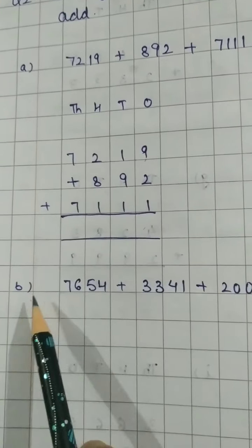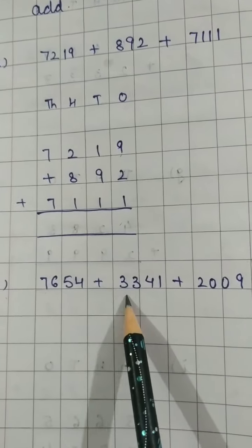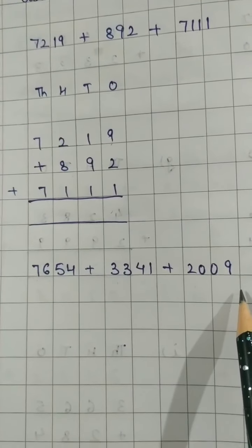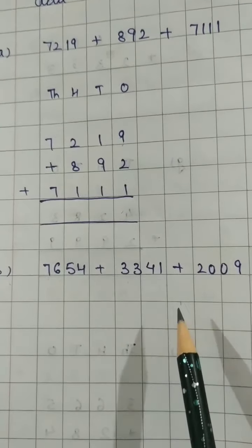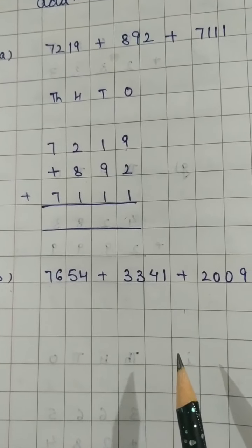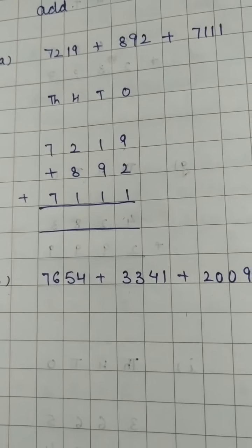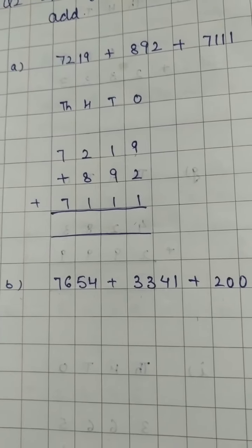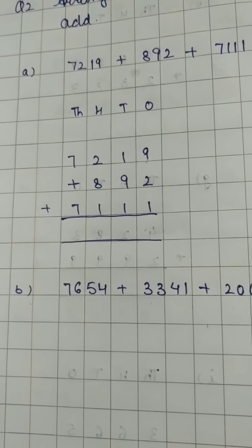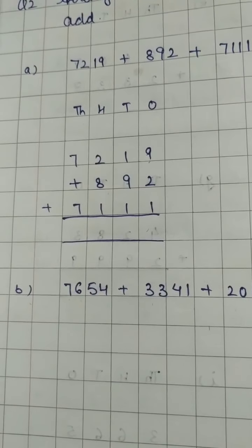B part, 7654, 3341 and 2009 are given. You have to arrange them and then add. These are the sample sums I can say. Sample sums and you have to practice by taking any of the examples. Just remember that you have to take three and four digit numbers only. Okay, children.